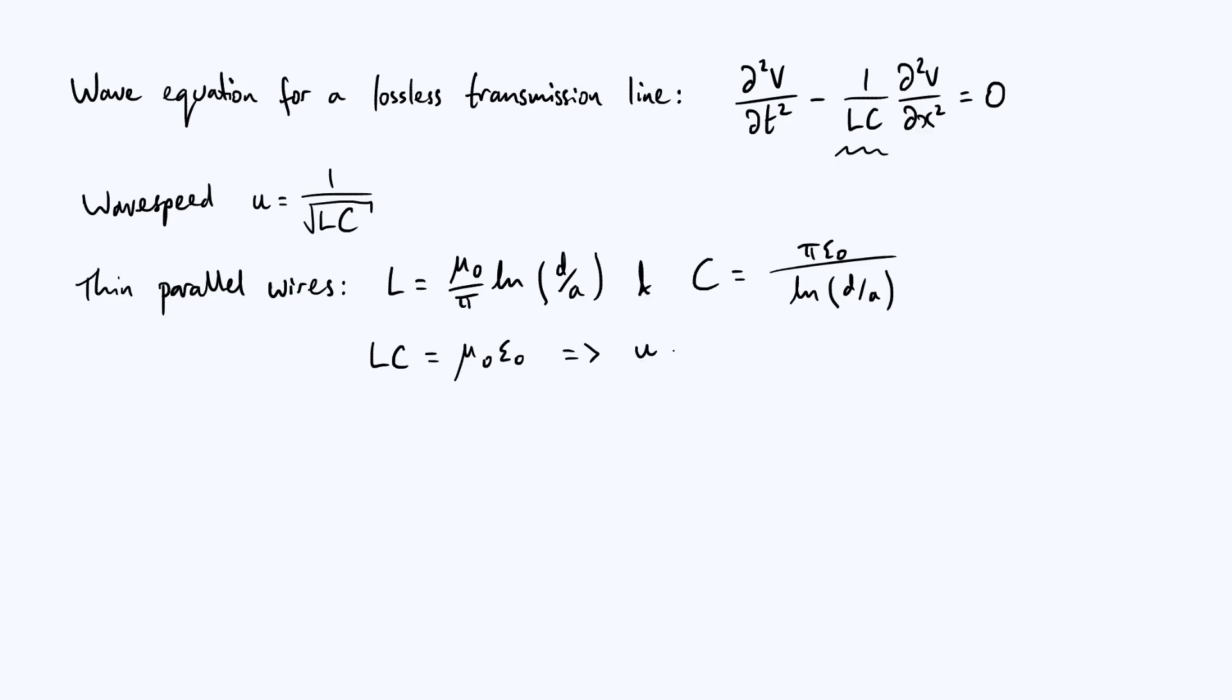So that of course means that the speed of propagation of waves is one over the square root of μ₀ε₀ which is actually the speed of light. This is a well-established relationship between fundamental constants μ₀, ε₀, and c. And so we conclude that on a transmission line made of a pair of thin parallel wires your voltage and current waves propagate at the speed of light.